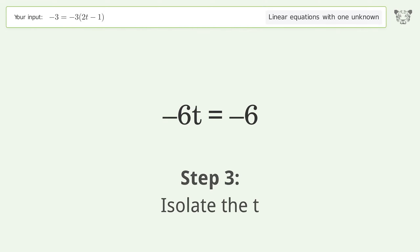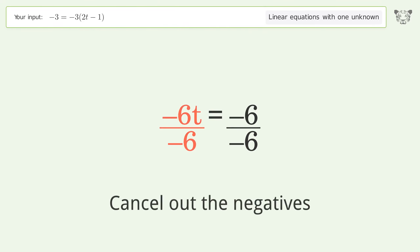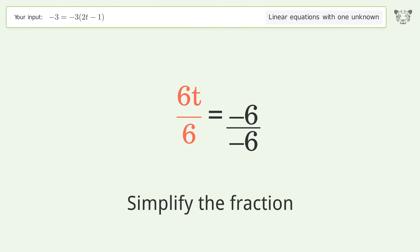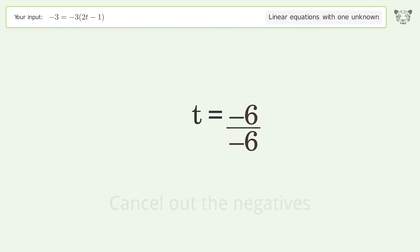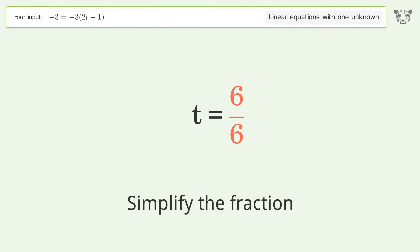Isolate t by dividing both sides by negative 6. Cancel out the negatives and simplify the fraction. Cancel out the negatives again and simplify the fraction.